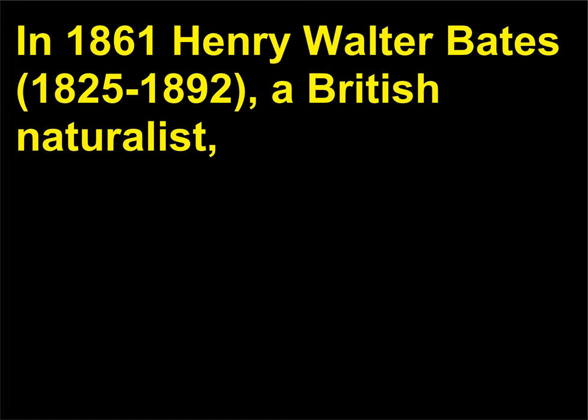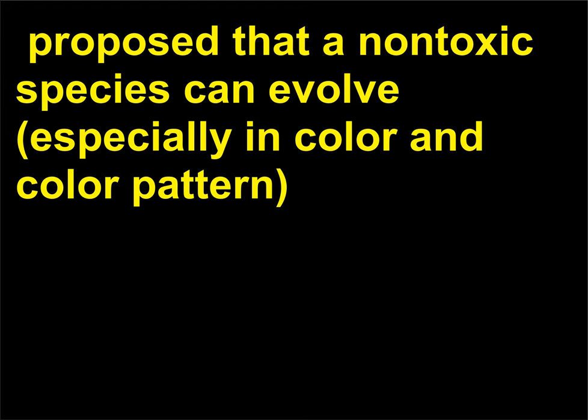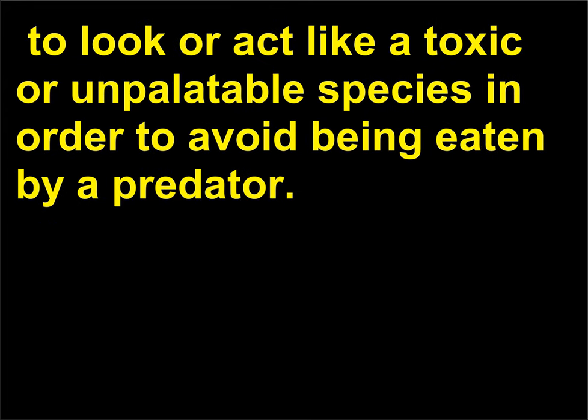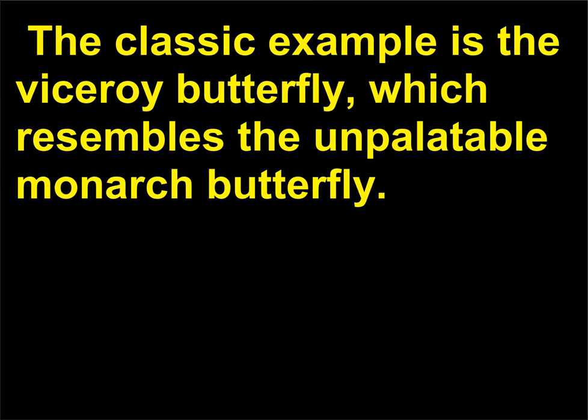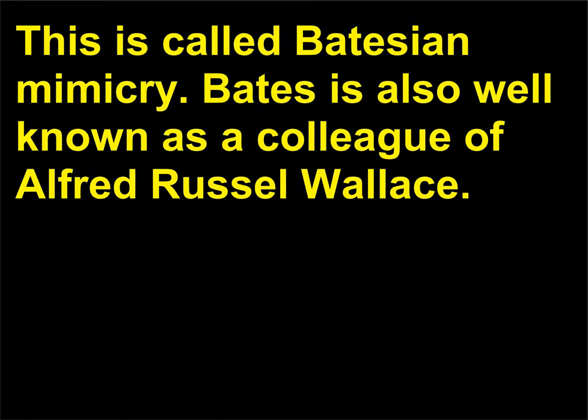What is Batesian mimicry? In 1861, Henry Walter Bates, 1825 to 1892, a British naturalist, proposed that a non-toxic species can evolve — especially in color and color pattern — to look or act like a toxic or unpalatable species in order to avoid being eaten by a predator. The classic example is the viceroy butterfly, which resembles the unpalatable monarch butterfly. This is called Batesian mimicry.